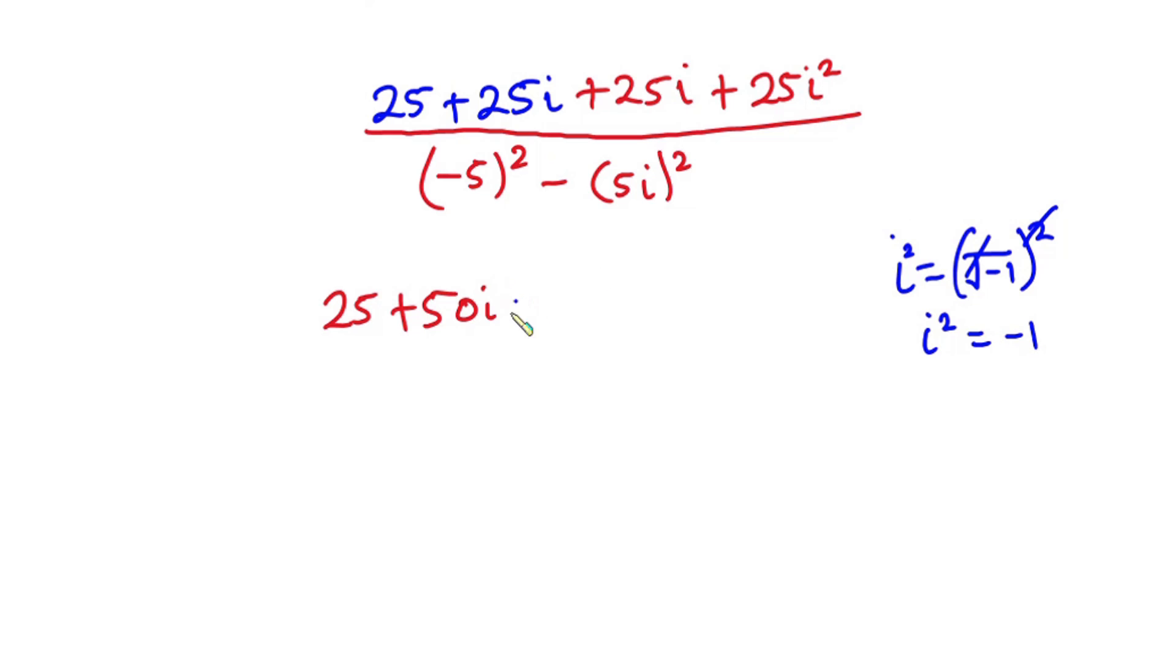So we have plus 25 then negative 1 divided by negative 5 squared is positive 25, then minus we have 5 squared is also 25, then i squared is negative 1. So now let's go ahead and simplify this further.